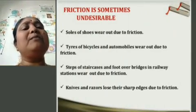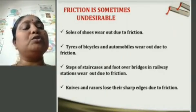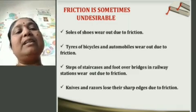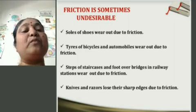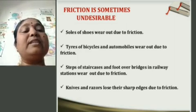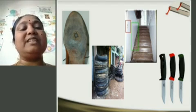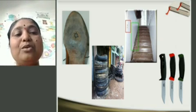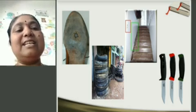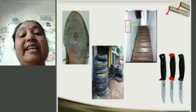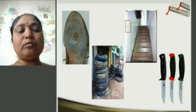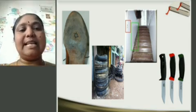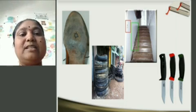Sometimes friction is undesirable. Soles of shoes wear out due to friction. Tires of bicycles and automobiles wear out due to friction. Steps of staircases and foot overbridges in railway stations wear out due to friction. Knives and razors lose their sharp edges due to friction. If shoes lose their roughness, we cannot walk properly and may skid. If a staircase is very smooth, we may skid on it. Knives also lose their sharpness over time due to friction.